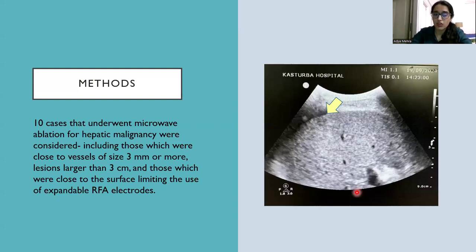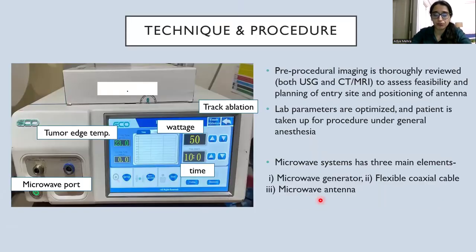Ten cases that underwent microwave ablation for hepatic malignancy were considered, including those close to vessels, lesions larger than 3 cm, and those close to the surface limiting the use of RFA. Pre-procedural imaging is thoroughly reviewed on both ultrasound and CT to assess feasibility, plan the entry site and positioning. Lab parameters and coagulation profile are optimized, and the patient is taken up for the procedure under general anesthesia.